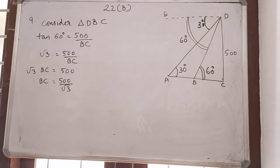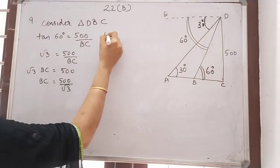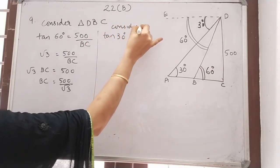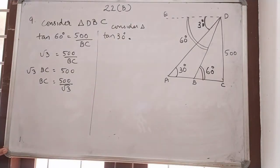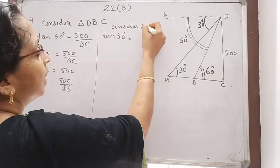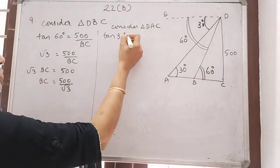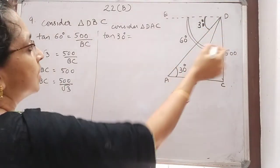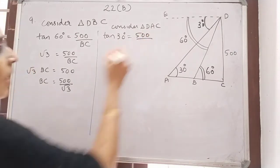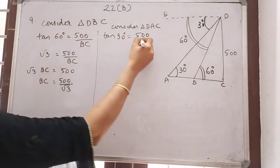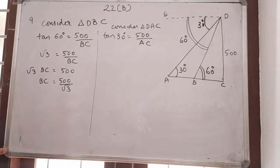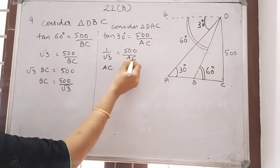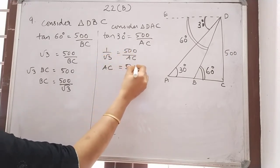Next we can take tan 30. Tan 30 is equal to opposite divided by adjacent. If we consider triangle DAC, tan 30 equals opposite which is DC, so we can write it as 500 divided by AC. Tan 30 value is 1 by root 3, so 1 by root 3 equals 500 divided by AC. Cross multiplying, AC is equal to 500 root 3.